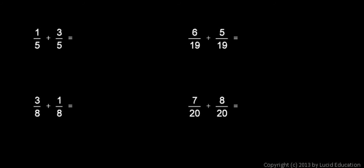So, in this first example, we have 1 fifth plus 3 fifths. Well, 1 plus 3 is 4, so I have 4 fifths, and that should make complete sense to you if you understand what we mean by like fractions.